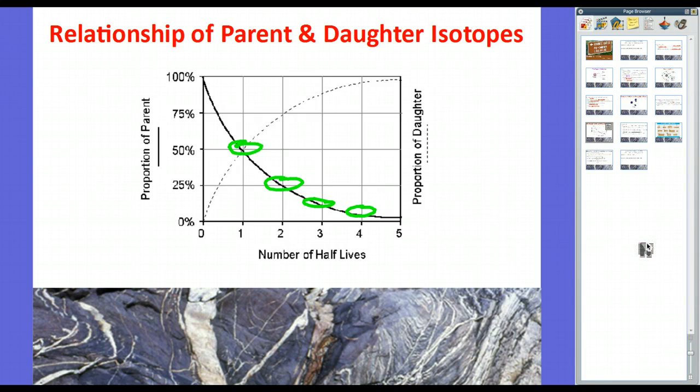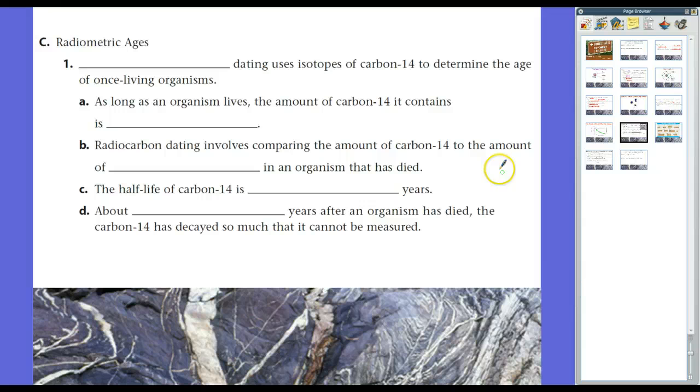So, relationship of parent and daughter isotopes. There you go. Half-lives. Now, because a half-life is constant, it allows us to determine, within a reasonable error, the ages, absolute ages of objects.